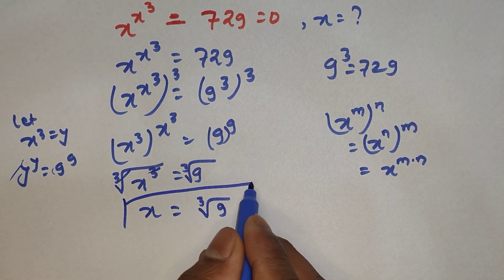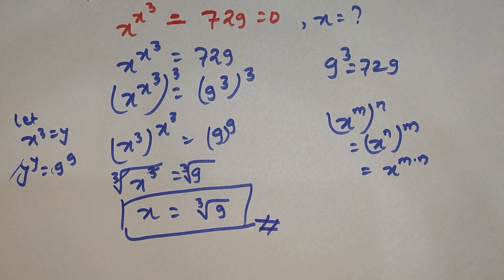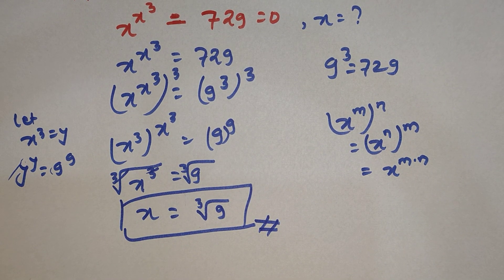The cube root of 9 is our final value of x. Hope you understand this question clearly. If you have any doubt, please ask me in the comment section. Thank you.